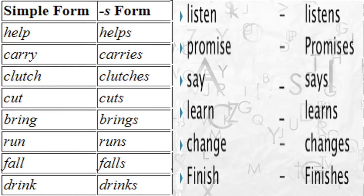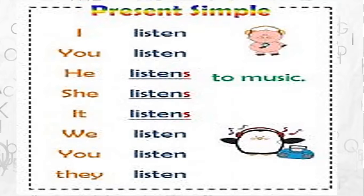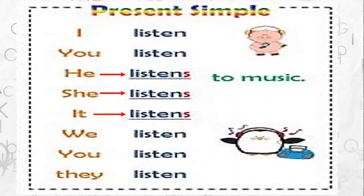The S form is used in the third person singular present tense. For example, in simple present: 'I listen' and 'you listen' — no need to add S. But when talking about he, she, or it, you say 'he listens to music,' 'she listens to music,' 'it listens to music.' So when using he, she, or it, the verb with its base form takes an S or ES. That is our second point covered.